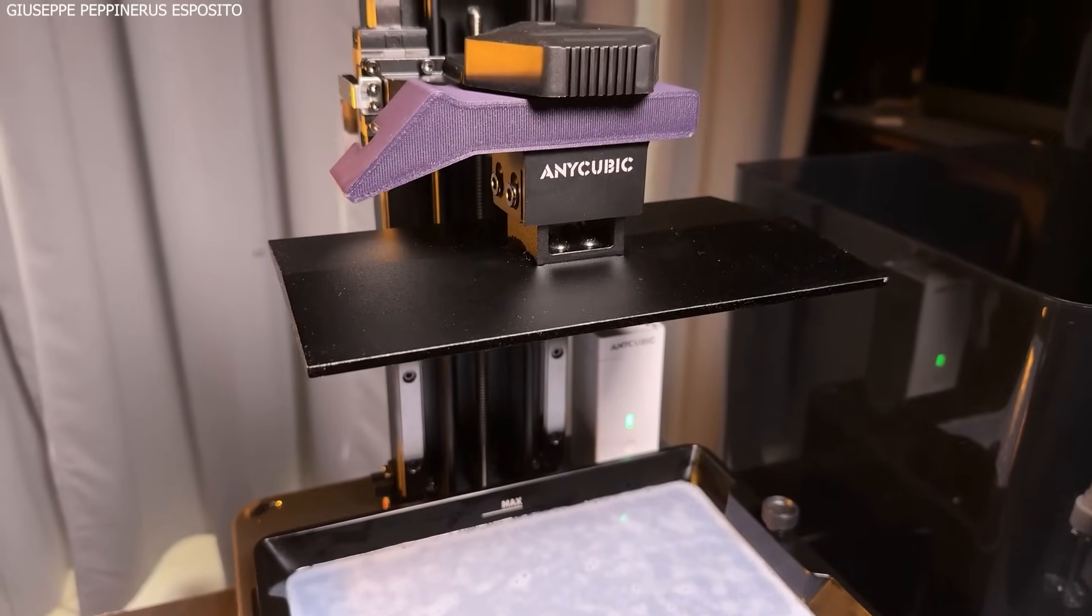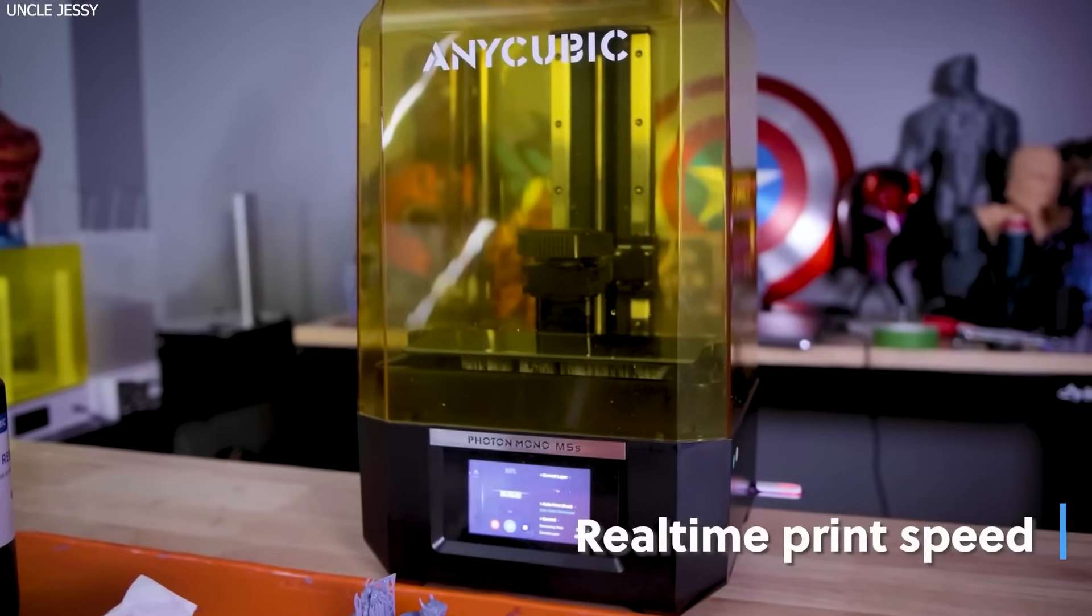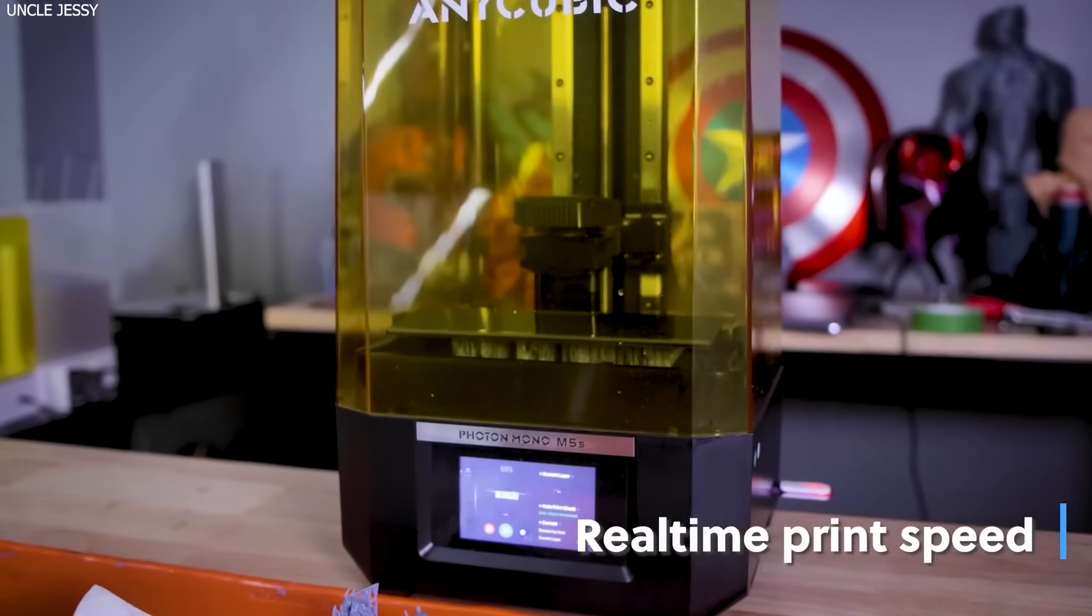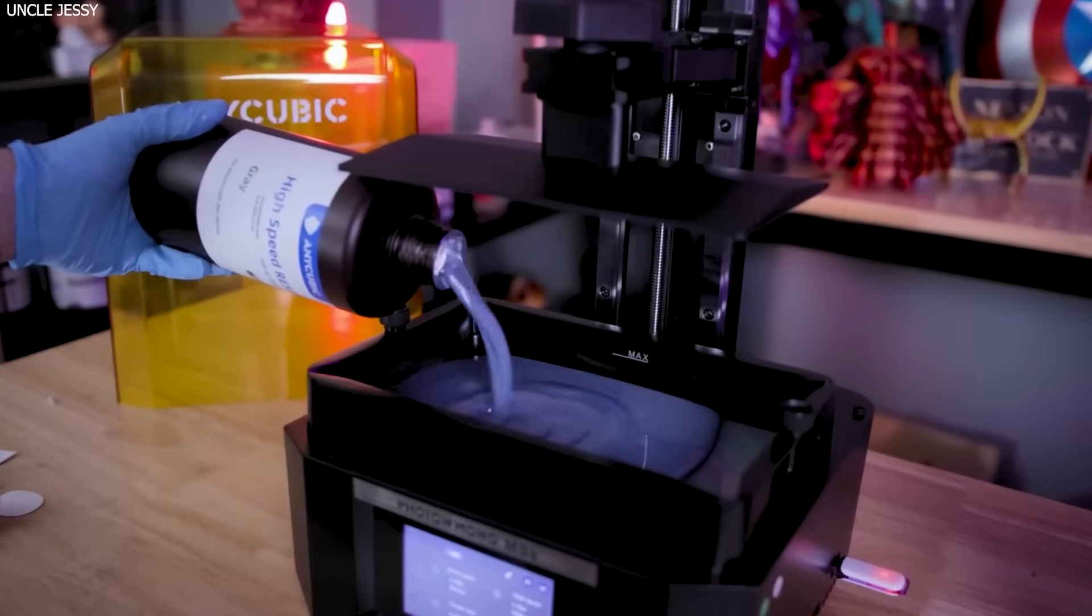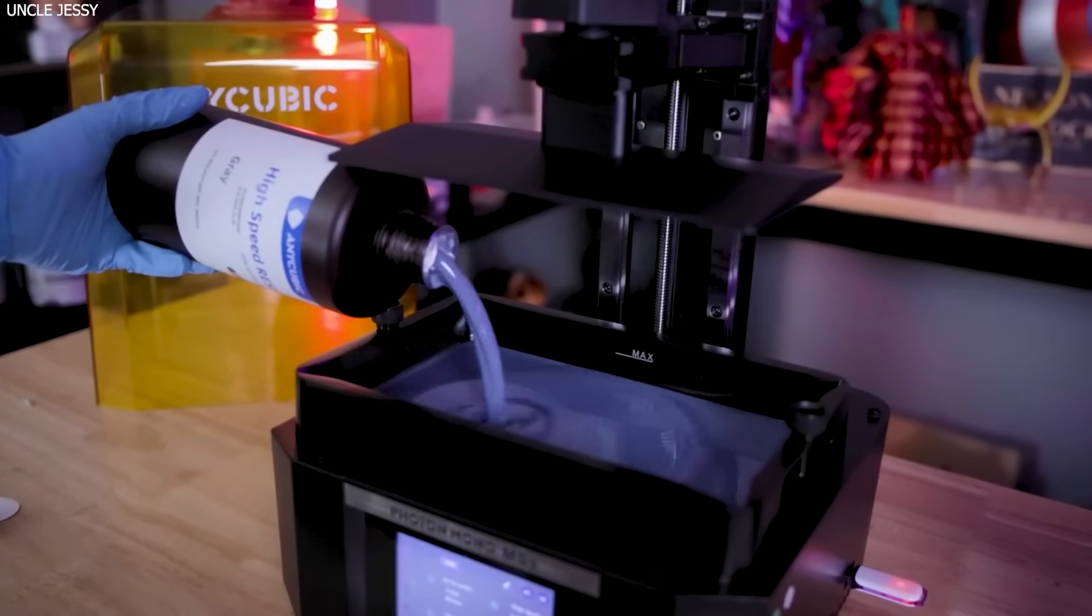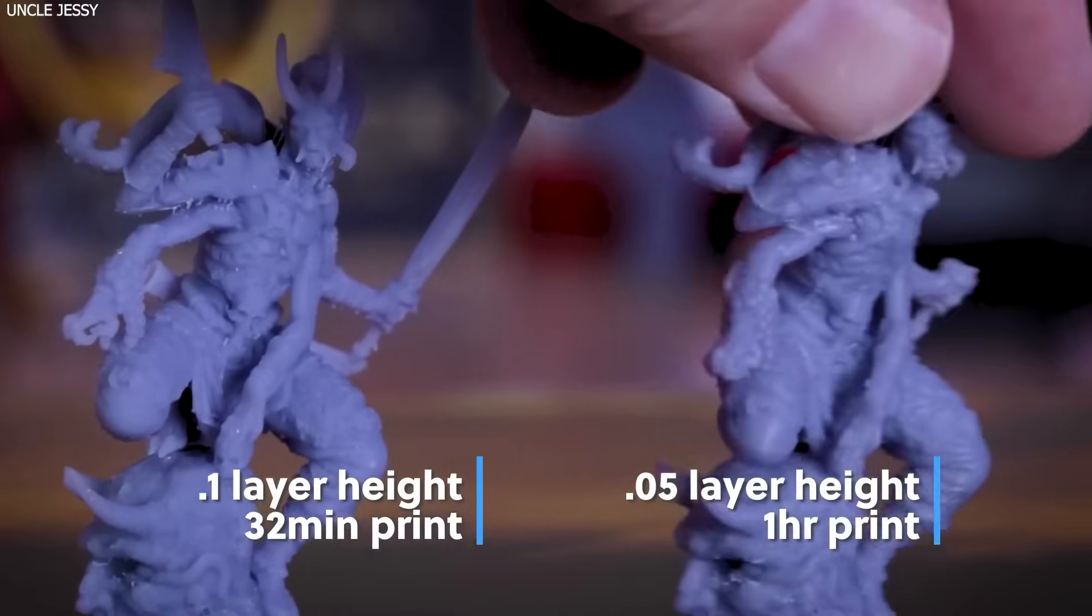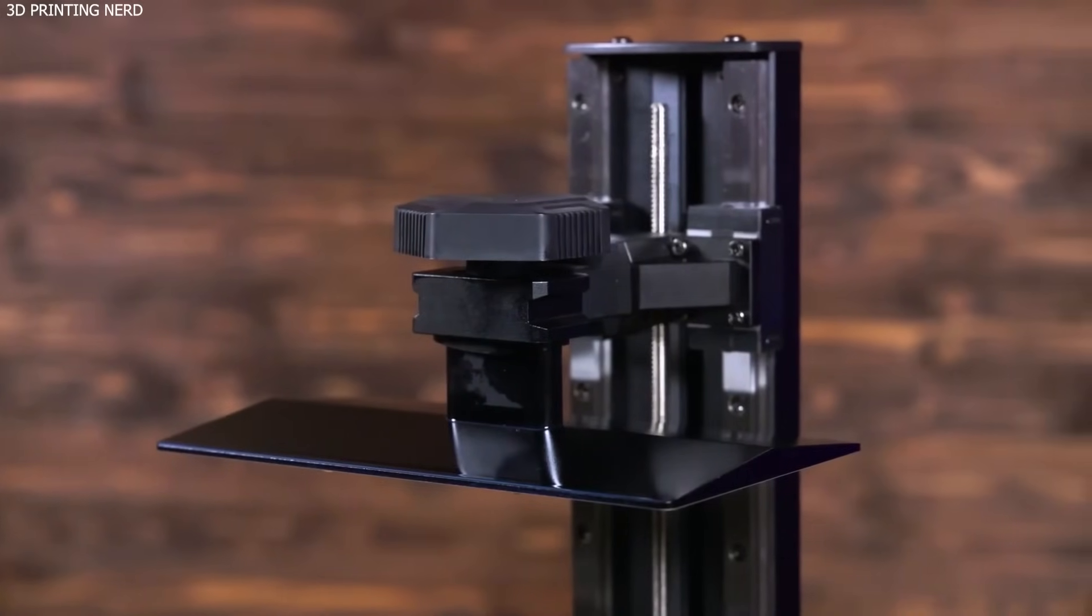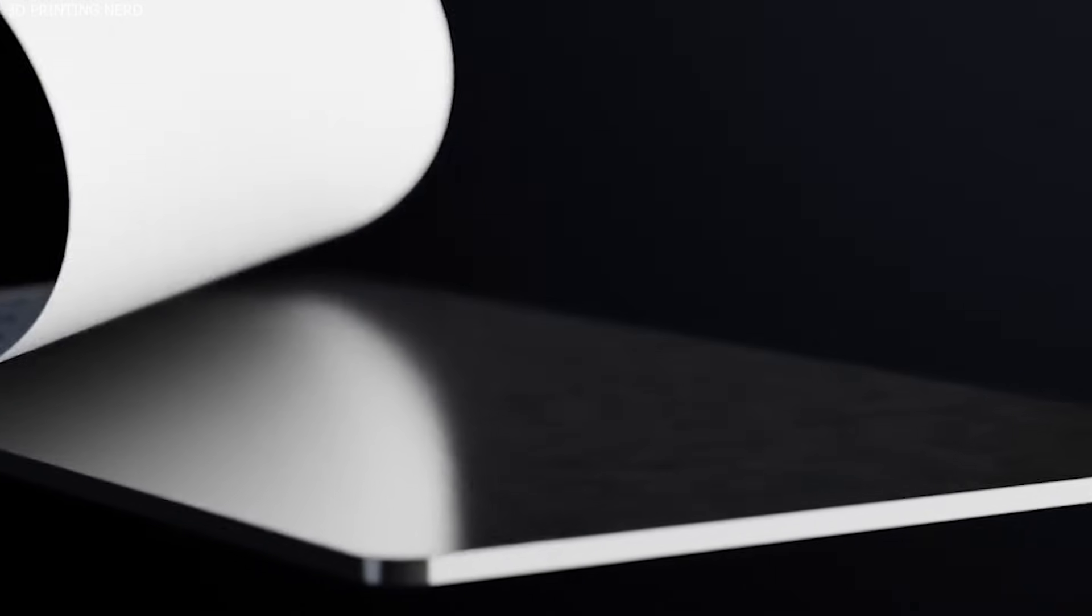The printer features automatic resin leveling, reducing setup time and making it easier for beginners. Additionally, its fast-curing speeds improve efficiency, allowing for quicker project completion. If you're a designer, artist, or professional seeking exceptional detail and quality, the Any Cubic Photon Mono M5's is the perfect resin printer.